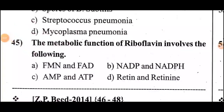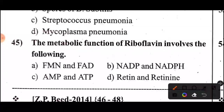65th question: The metabolic function of flavin involves the following — 5 seconds to guess. Answer: Option A — FMN and FAD. The metabolic function of riboflavin involves FMN and FAD.